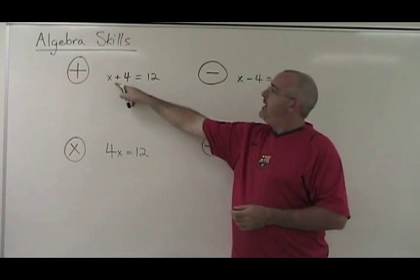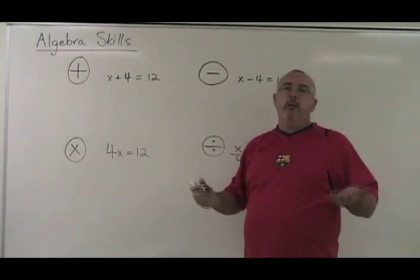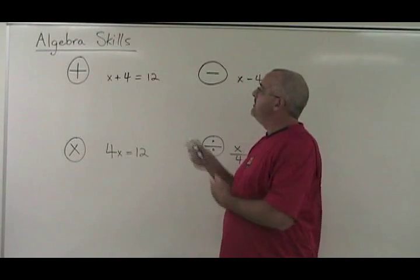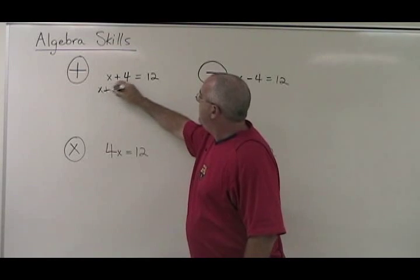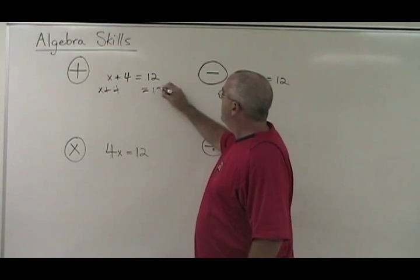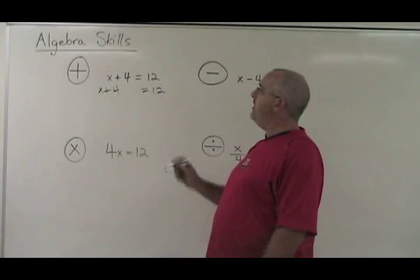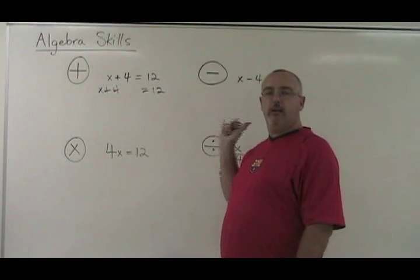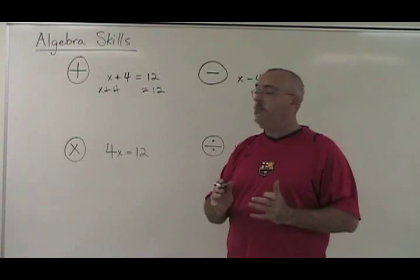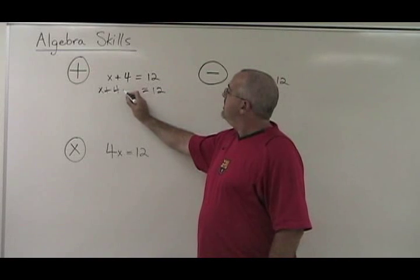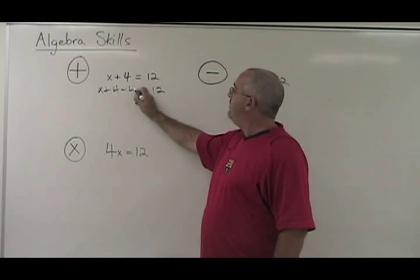Addition. X is an unknown. X plus 4 equals 12. We want to know what X is. The logic is: I am adding a 4 to my variable, but I don't want that 4 with the variable. I want to move it to the other side of the equal sign so that I can get my variable isolated, alone. Since I am adding 4, what is the best way to get rid of that 4? You do the opposite — you subtract 4.